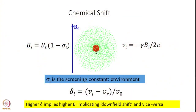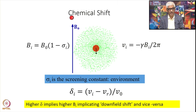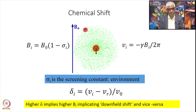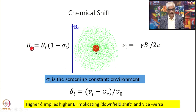We were discussing chemical shifts — a quick recap from last time. We have a nucleus with an electron cloud around it, indicated by the green dots, and an applied magnetic field B0. This B0 field induces a current in the electronic cloud, which produces a magnetic field opposing the externally applied field. Therefore the field seen by the nucleus is B_I, given by B0 times (1 minus sigma_I).